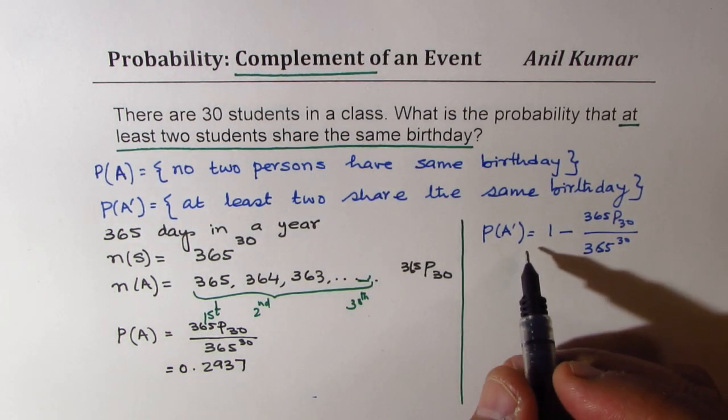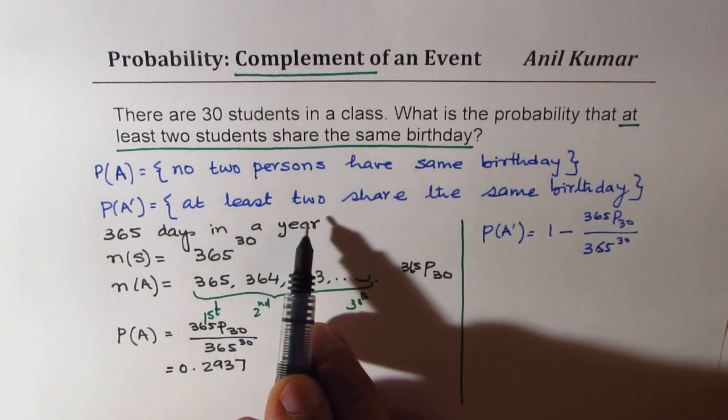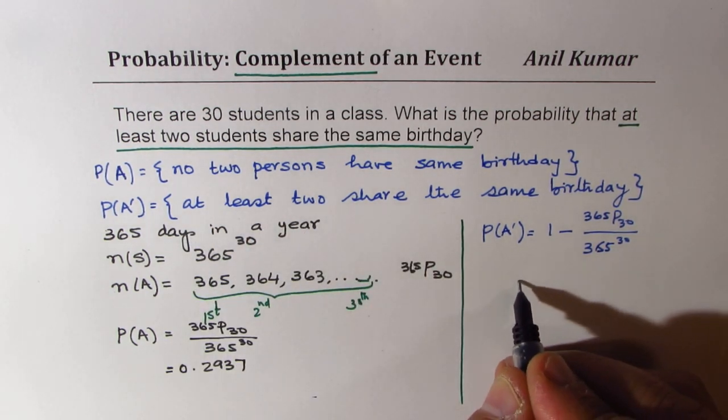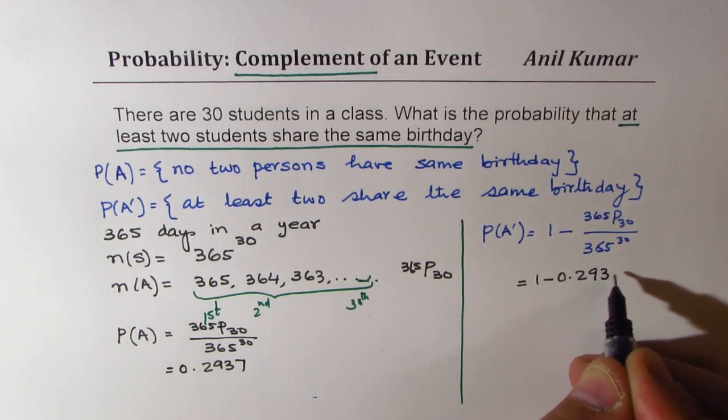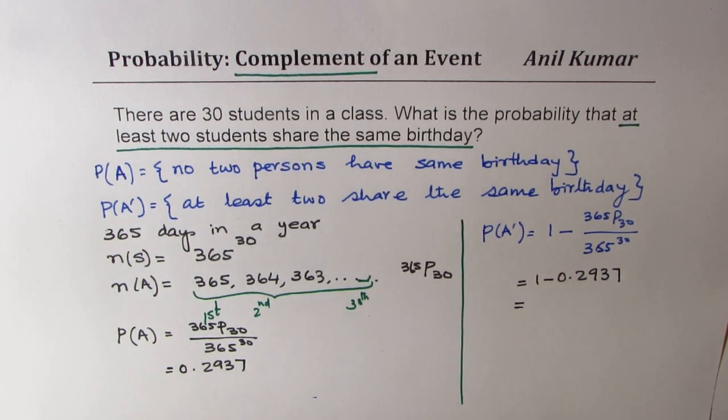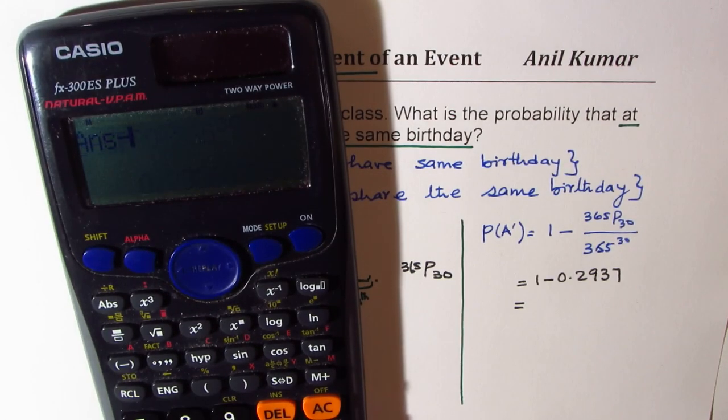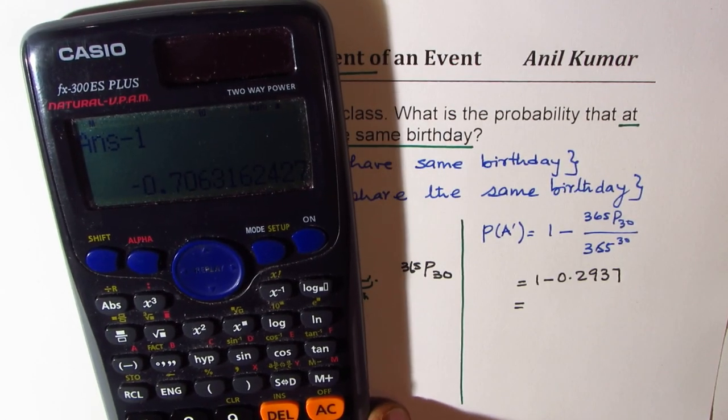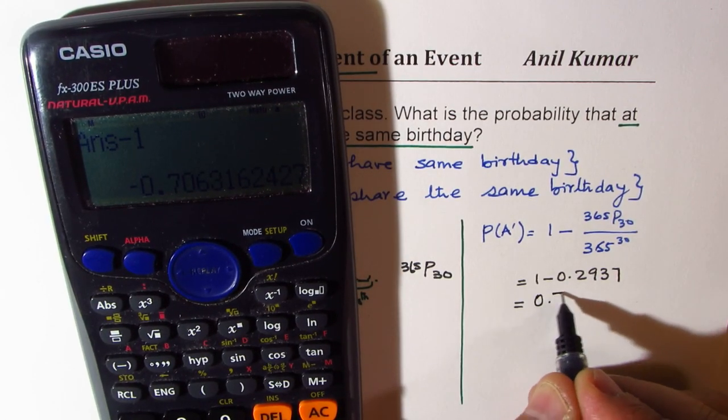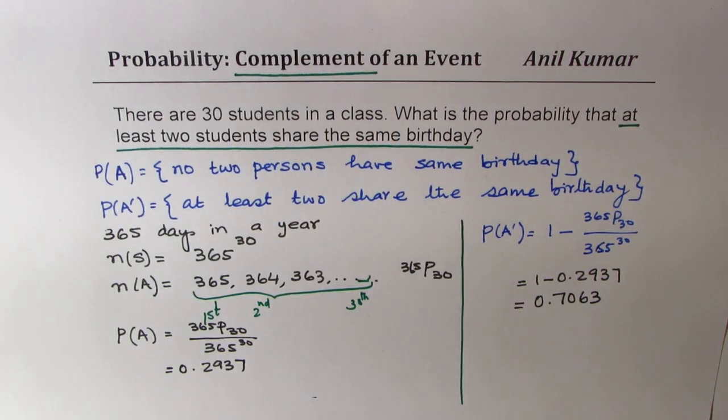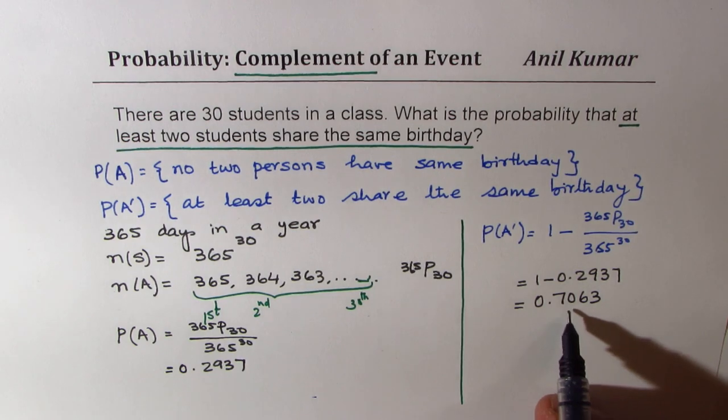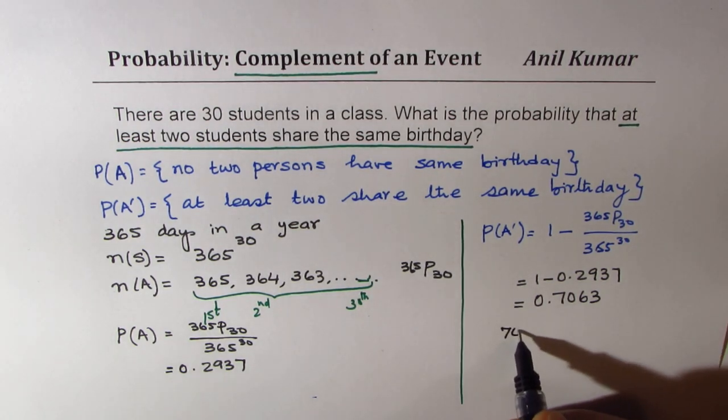And here, this probability that at least two share the same birthday will be 1 minus 0.2937, and that is equal to 0.7063. So it's a pretty high percentage. So it is about 70.63%.